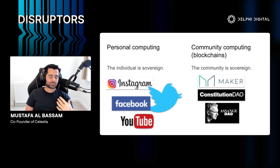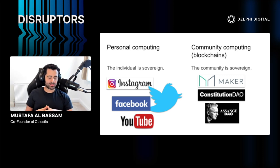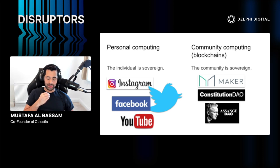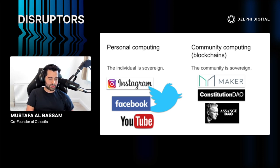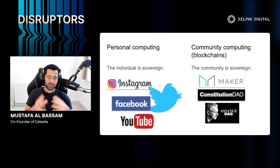If you look at the personal computing revolution in the 90s, it allowed individuals to become sovereign — platforms like Twitter and Instagram allowed individuals to share content and spread messages to the masses in ways that weren't possible before. But blockchains are effectively community computers — they're the community computing revolution that allows communities to be sovereign. DAOs are a very good example of this.